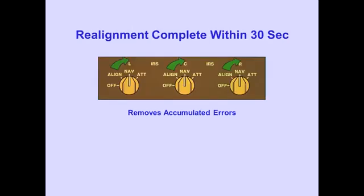Rotating the selector to NAV, the realignment begins. Fast realignment completes in 30 seconds. Fast realignment removes accumulated acceleration errors, providing for more accurate operation.